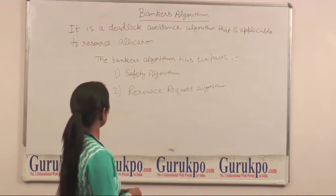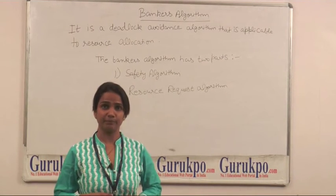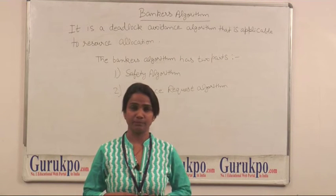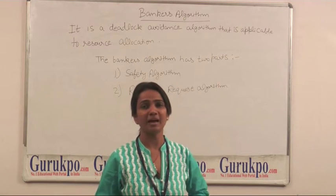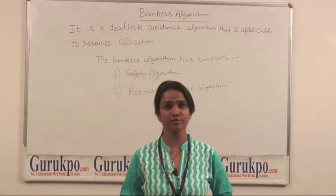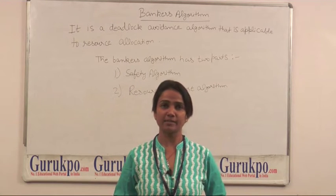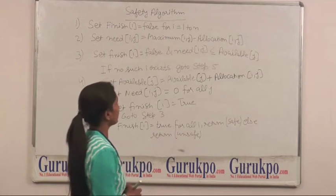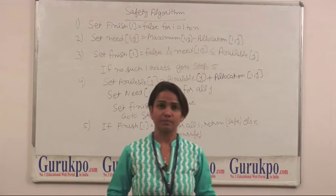This algorithm is a deadlock avoidance technique which is applicable for resource allocation. Banker's algorithm has two main parts: first, safety algorithm, and second, resource request algorithm. Safety algorithm completes in five steps.